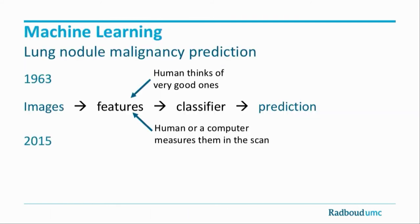Very similar to then, we have images; from these images we extract features. These features go into a classifier and the classifier makes a prediction. The features are usually handcrafted by us humans. We know that a spiculated nodule is probably more likely to be malignant than a smooth one — that is a potential feature. Size is another feature. We think of the features and then they are extracted either by people or by a computer, giving us the prediction.